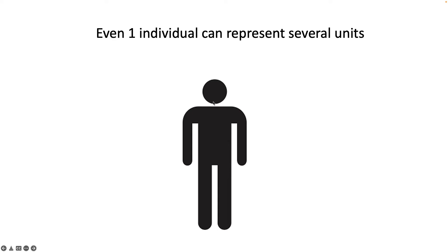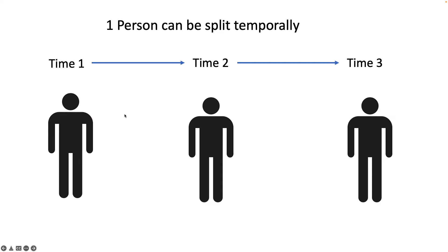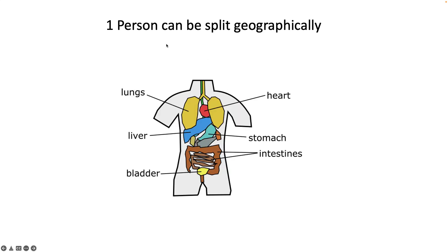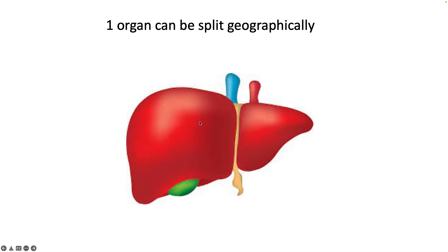It can get even more specific where one individual can be subdivided into many units. One way is measuring a single person's blood at multiple times — if we're trying to attribute a heart attack to a specific event, we can measure exposures at different time points and attribute some degree of causality. Another way is to split a person geographically: each organ can be thought of as a sample of the whole body, and each cell is a sample of that organ. If we take a liver biopsy, the group of cells we collect is a sample of that organ's population of cells.